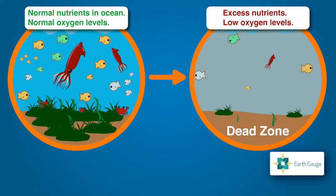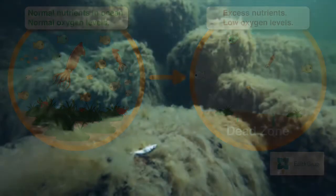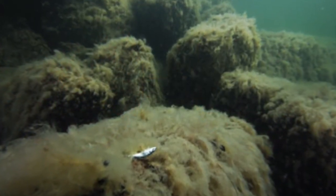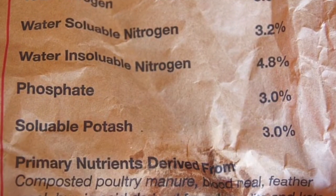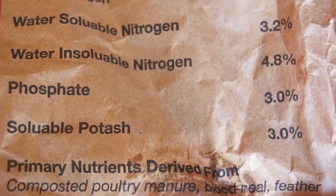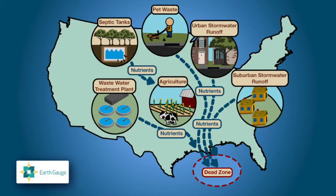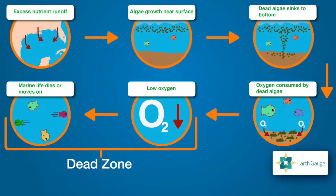Dead zones are aquatic areas with so little oxygen that almost nothing can survive. They look like this — an underwater desert completely devoid of life. The process that forms them is called eutrophication. It starts when nutrients like nitrogen and phosphorus make their way into waterways through wastewater treatment and runoff. These nutrients cause algae growth to skyrocket, which leads to enormous algae blooms. As the algae dies off,